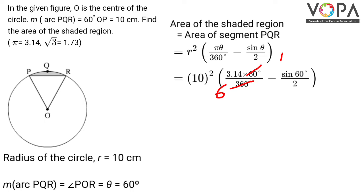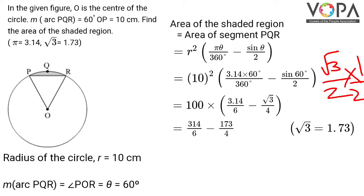We can write 100 × (3.14/6 - √3/4), since sin 60° = √3/2 and dividing by 2 gives √3/4.